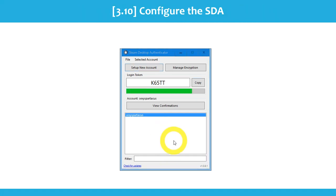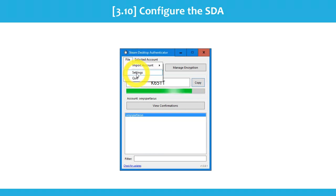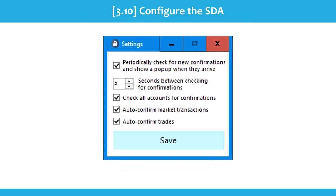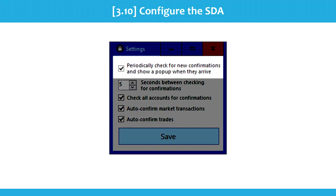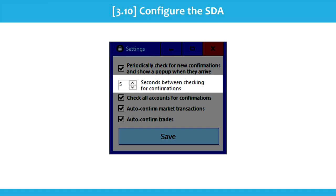Now that we've done all of that, we need to set up the configuration. Click on File, then Settings, and the settings dialog opens. The first box says 'periodically check for new confirmations and show a popup when they arrive' — this means when someone sends you a trade offer and you need to confirm it, a popup will show up on your screen and you can click accept or decline. This works the same as confirmations in the Steam Mobile Authenticator. In the second box you can set the time between checking for confirmations — 5 seconds is the default, but you can set it to 60 seconds or whatever you want.